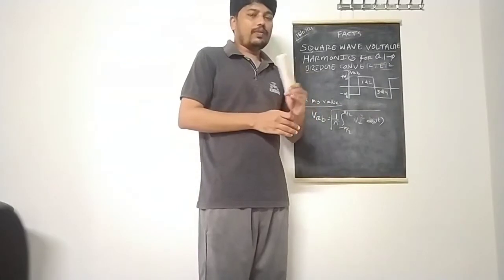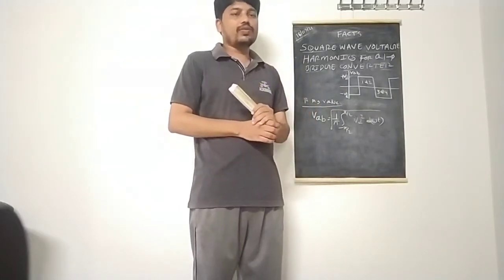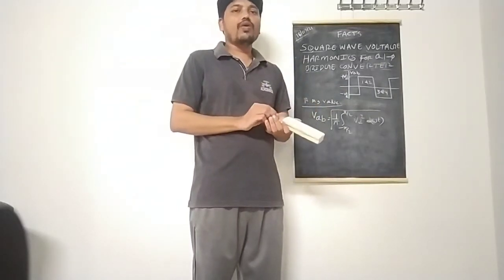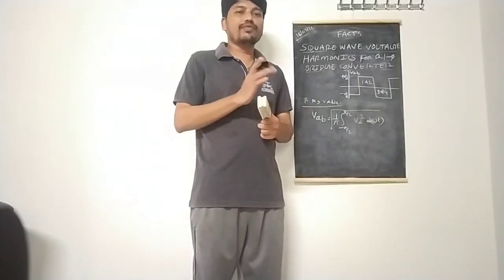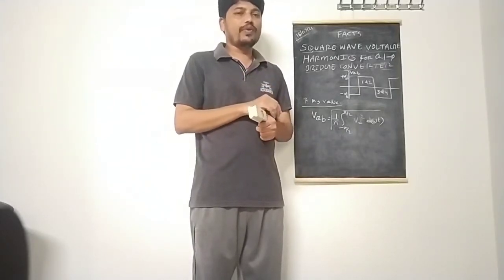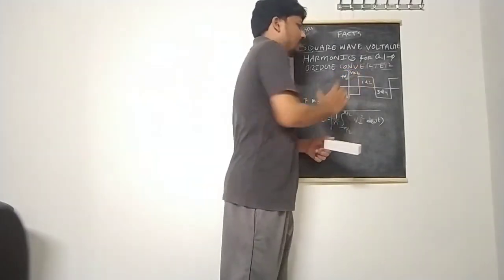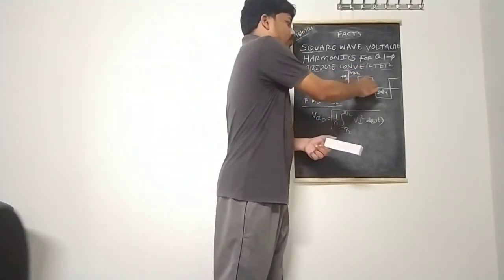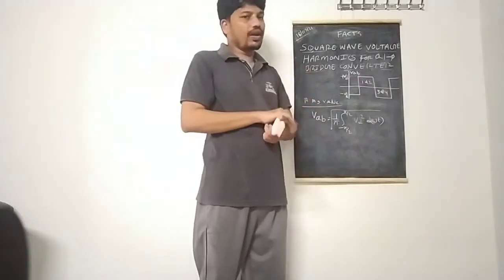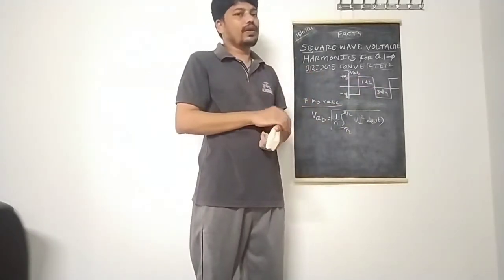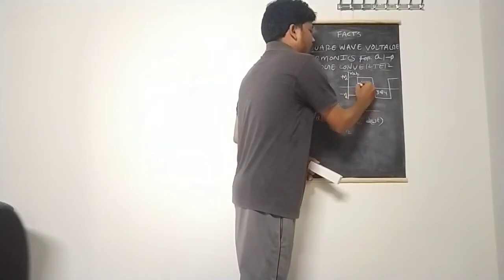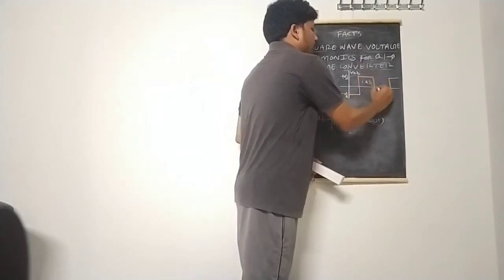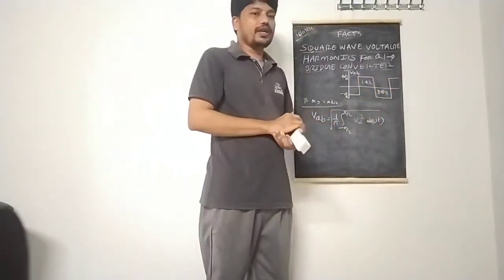In the previous class we studied the bridge converter. The bridge converter has four valves, and depending upon the valve operation we get a square-wave output voltage. This waveform has levels 1, 2, 3, and 4. This is the output voltage waveform of a single-phase bridge converter.